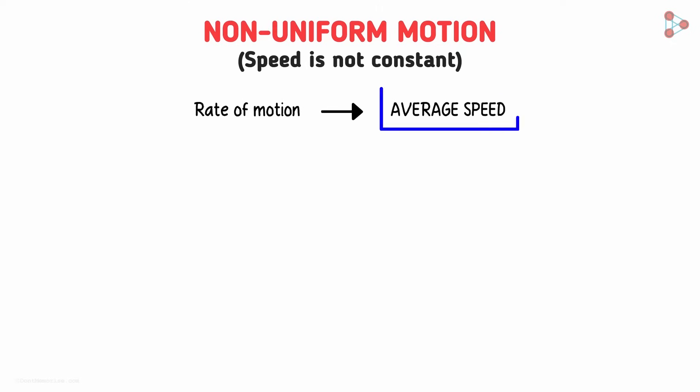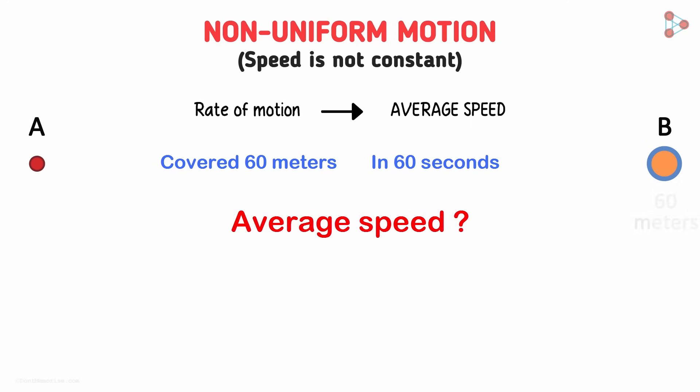So how can we derive average speed? This boy leaves point A to reach point B which is 60 meters away from A. And he has been walking at varied rates of motion, basically non-uniform motion. He takes 60 seconds to reach point B. So he has covered 60 meters in 60 seconds. What is his speed?